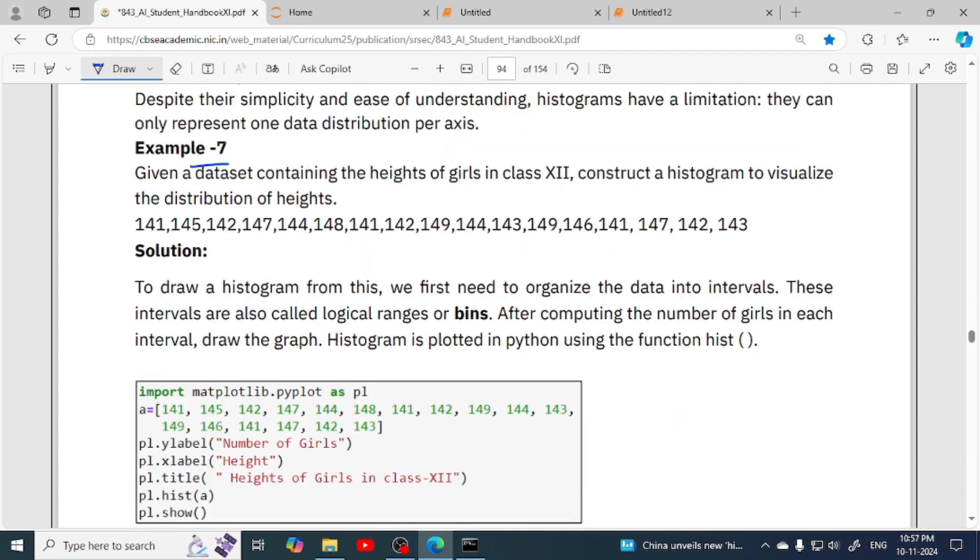Now let's see Example 7. Given a dataset containing heights of girls in class 12th, construct a histogram to visualize the distribution of heights. We have to create a histogram using this data. As this dataset is quite small, if it was a large dataset then we would have to divide or organize the data into intervals, for example 141 to 145 has how many girls, then 146 to 150, like this.